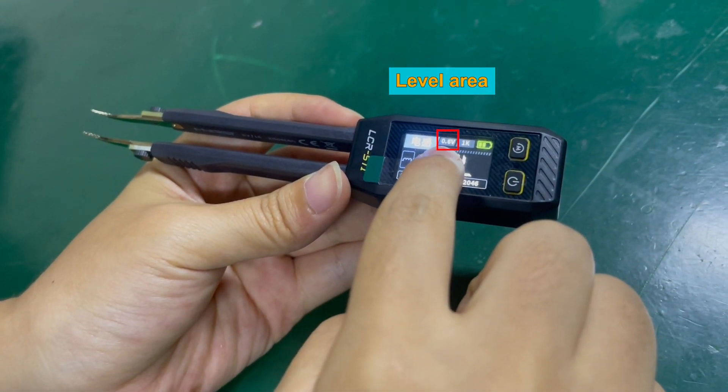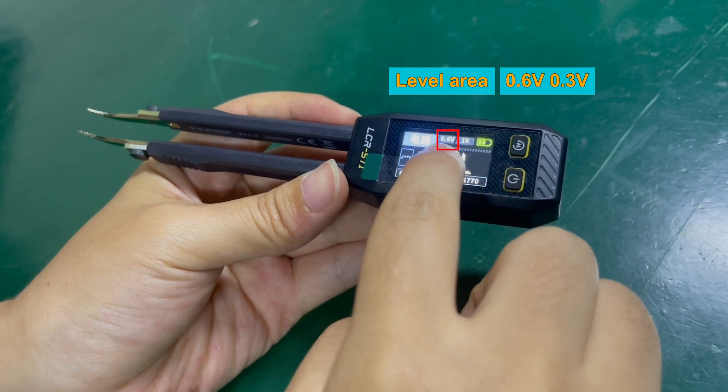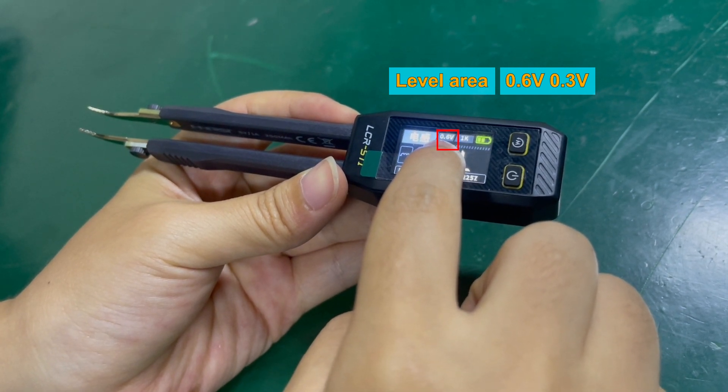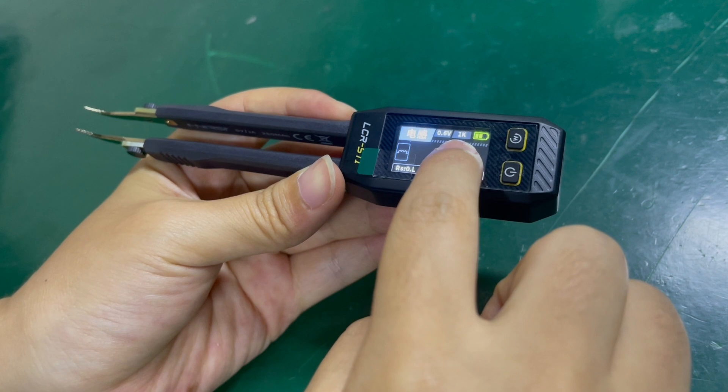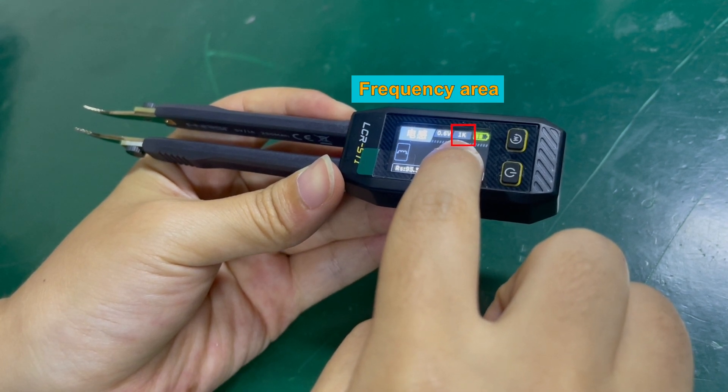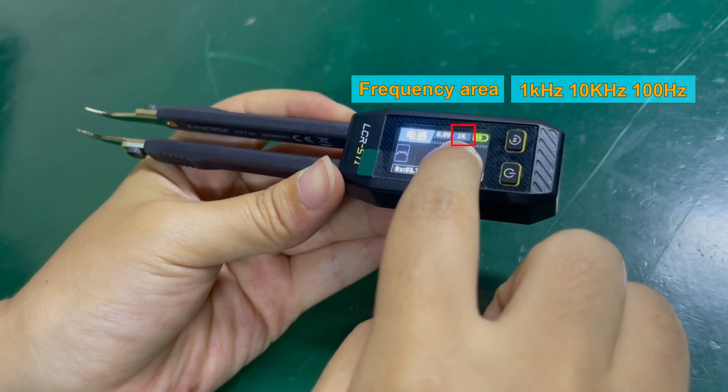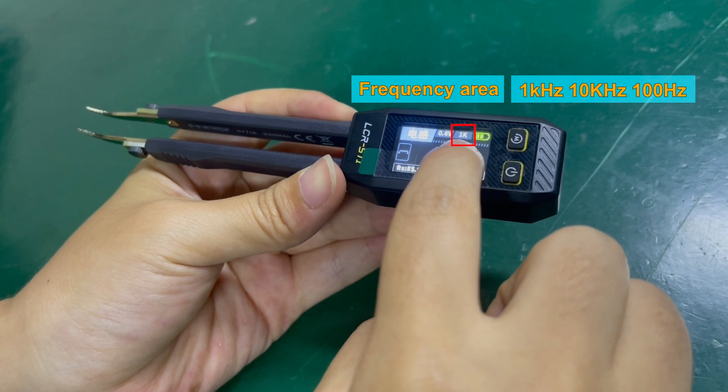Here is the level area, with 0.6 volts and 0.3 volts options. The other one is the frequency area, which can be switched to 1 kHz, 10 kHz, or 100 Hz.